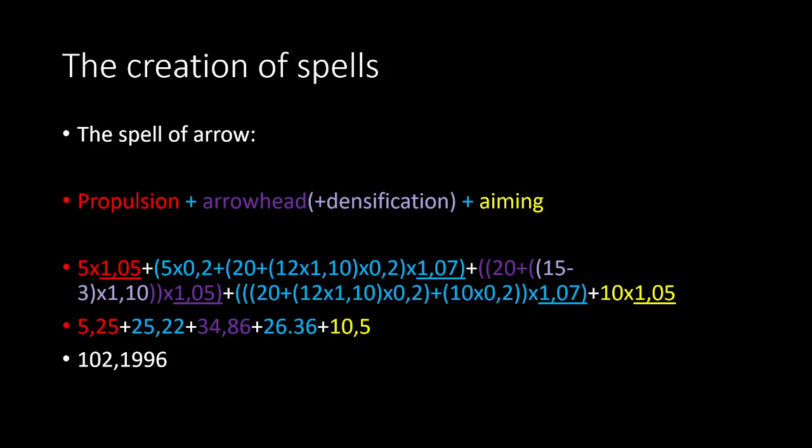It's composed of three elements. The first is propulsion—the element which gives the spell its speed. After that, a little link. Then the arrowhead—the energy which will penetrate the target. Then another link, and then the aiming, which is linked to the precision of the spell.